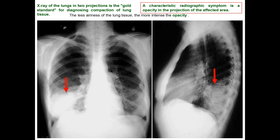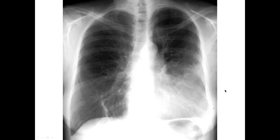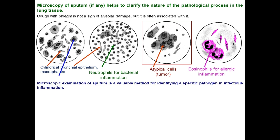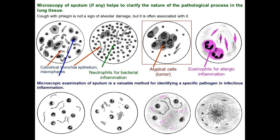Microscopy of sputum helps clarify the nature of the pathological process in lung tissue. A cough with sputum is not a sign of alveolar damage per se, but is often associated with it. Microscopic examination of sputum is a valuable method for identifying a specific pathogen: in infectious inflammation, we can identify streptococcus, fungi, or staphylococcus, and also easily see neutrophils, atypical cells if a tumor is present.